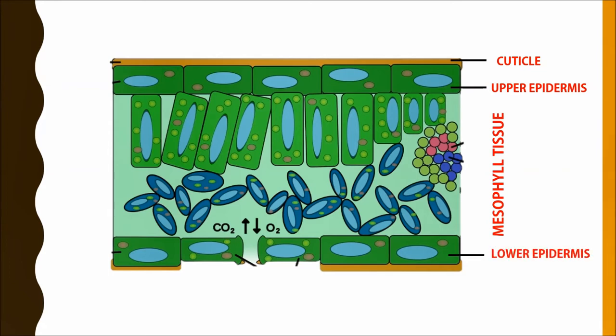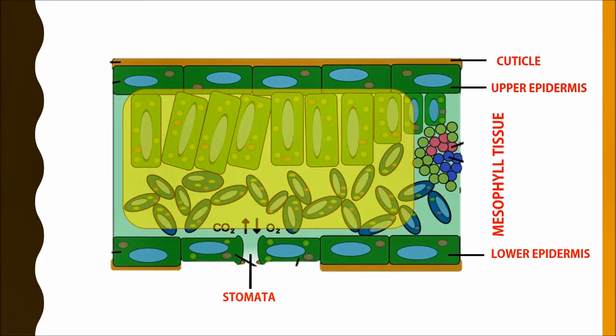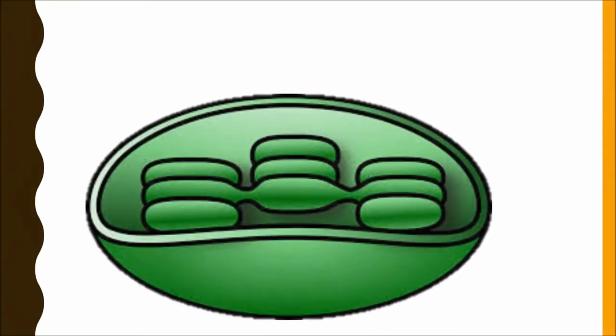In between the upper epidermis and lower epidermis, there is mesophyll tissue. We can find the stomata in the lower epidermis. The mesophyll tissue is the prominent zone to facilitate the process of photosynthesis containing the chloroplast cell organelles.